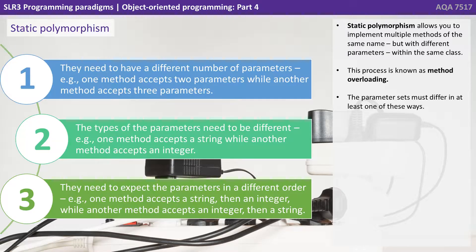The parameter set must differ in at least one of three ways. One, they need to have a different number of parameters — e.g. one method accepts two parameters while another accepts three. Two, the type of the parameters need to be different — one method accepts a string while the other accepts an integer. And three, they need to expect the parameters in a different order — e.g. one method accepts a string and an integer while another method accepts an integer and then a string.